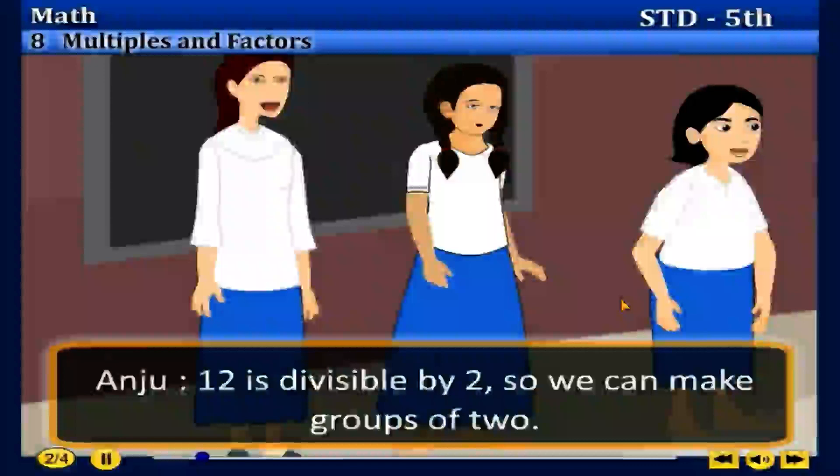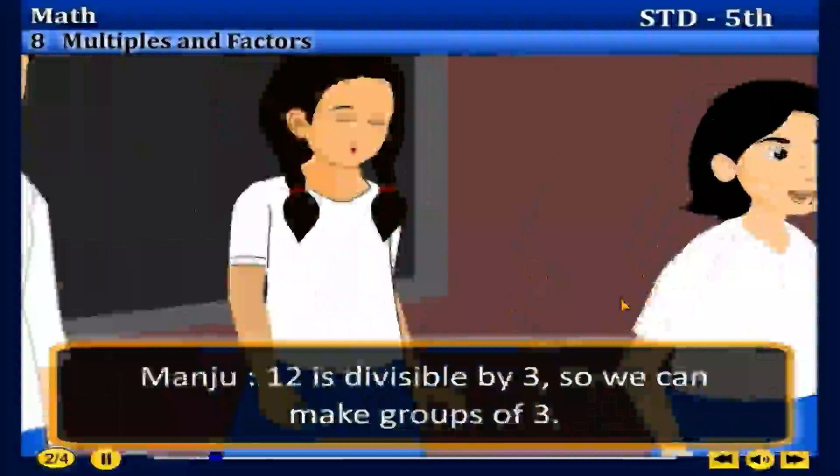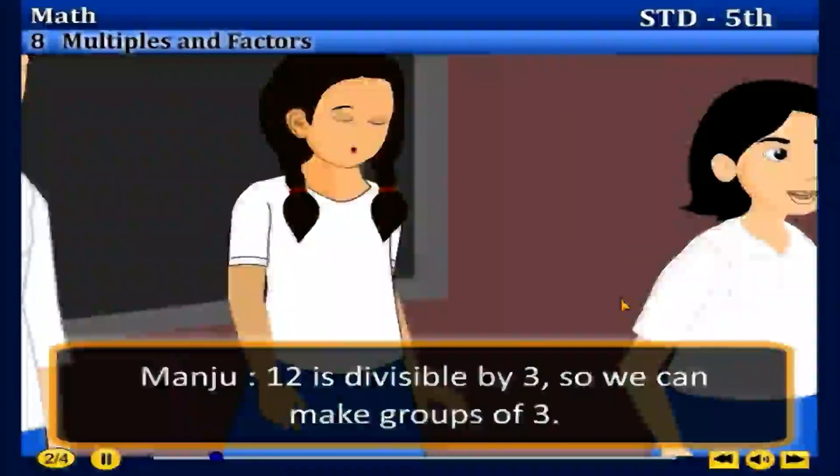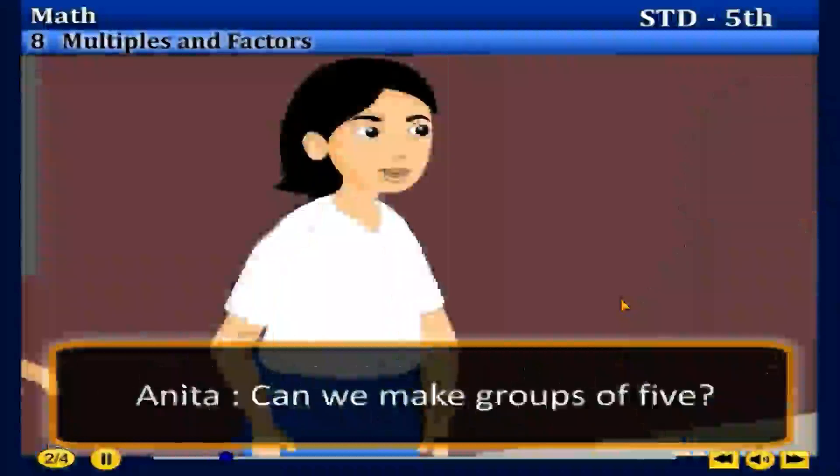Manju: 12 is divisible by 3, so we can make groups of 3. Sagar: We can also make groups of 4. Anita: Can we make groups of 5?